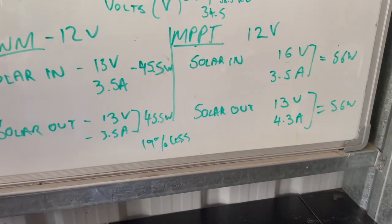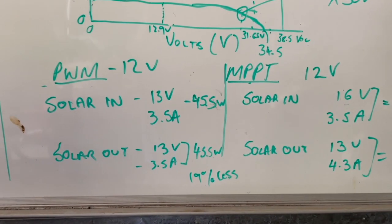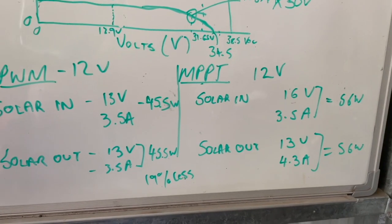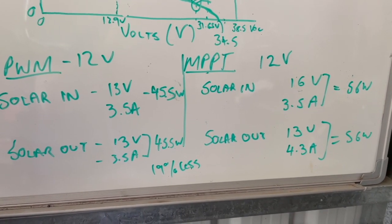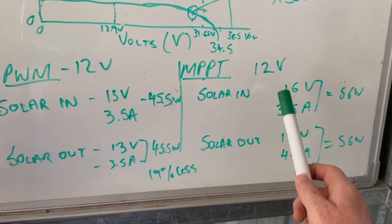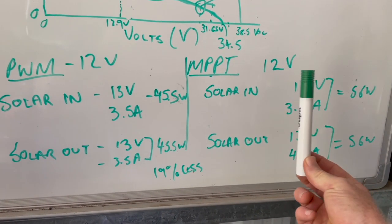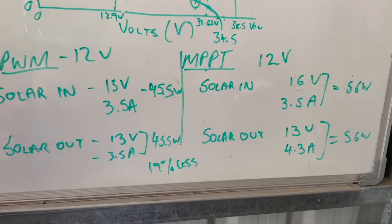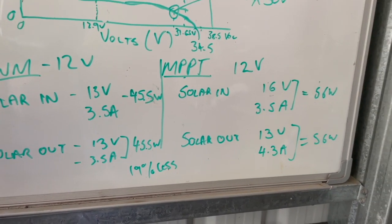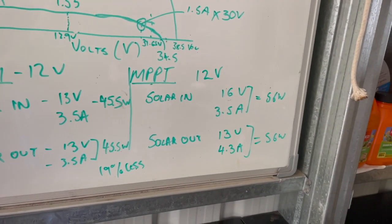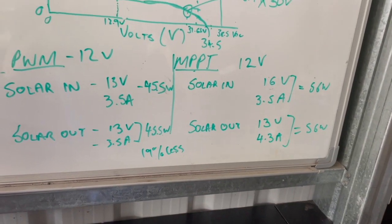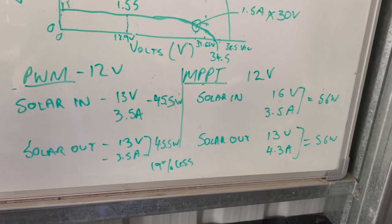But I also must stress that in the middle of summer, when you've got your panel out, the hotter the panel gets, this voltage will reduce, which brings that down even further, meaning that the MPPT is getting less and less out of the panel. So those are the main differences between the two.